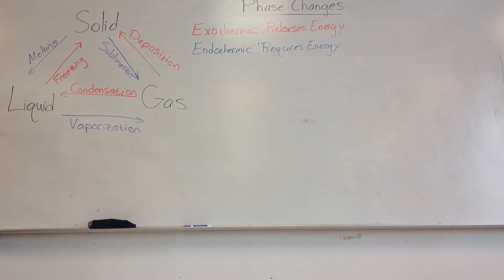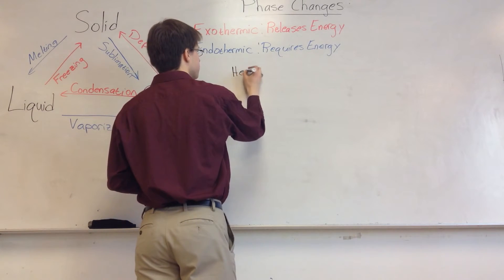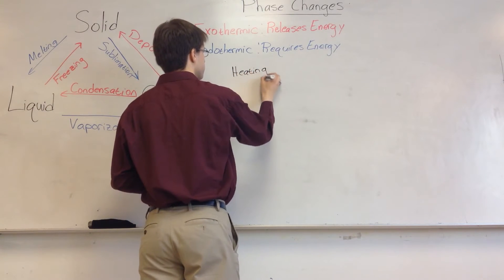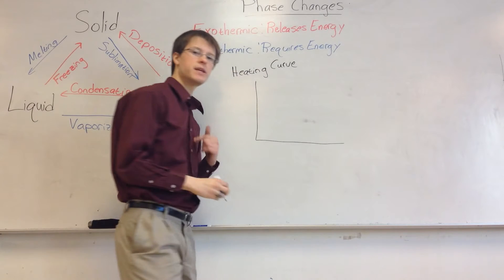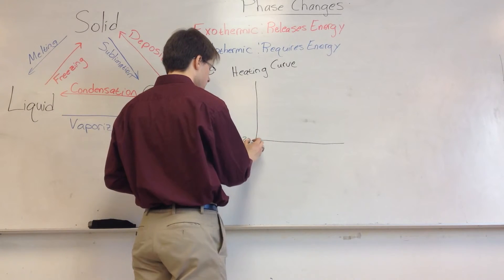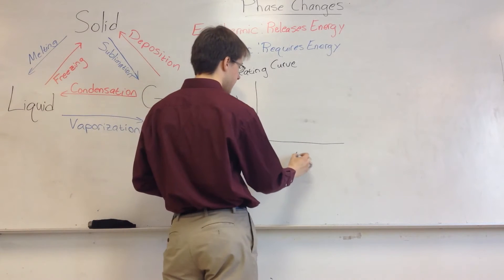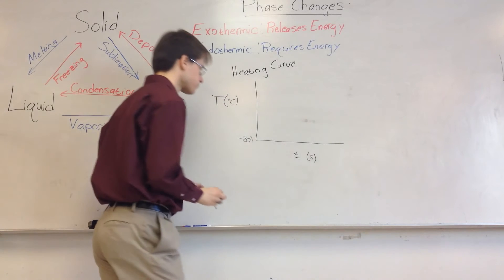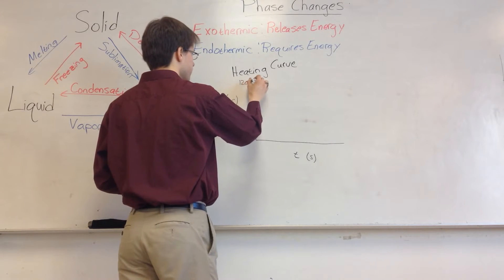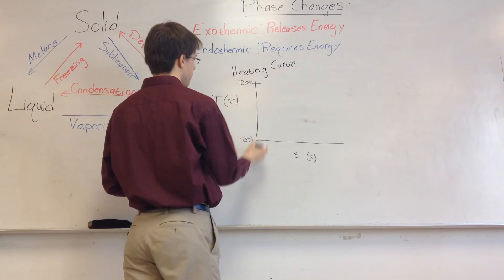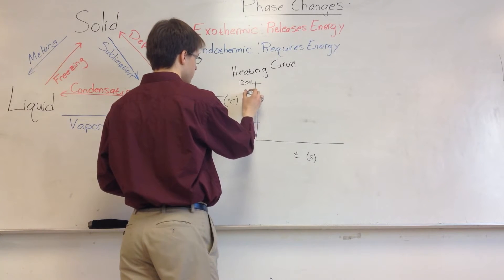When you're thinking about these types of processes, there's something called a heating curve. We want to think about heating up a substance — let's say at negative 20 degrees. This side will be temperature in degrees Celsius, and this will be time in seconds. I want to heat water from negative 20 degrees to 120 degrees, meaning it's going to pass through both its melting point and its boiling point, which is 100.